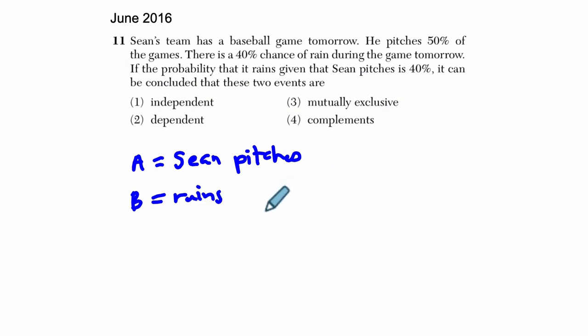So we have these two events A and B and they're telling us that the probability of A happening, where Sean pitches, that's half, that's 50%. And the probability of it raining, the probability of B happening, is 40%.